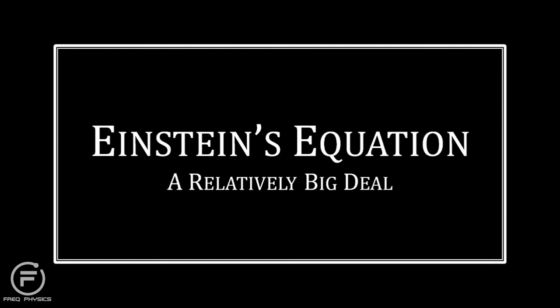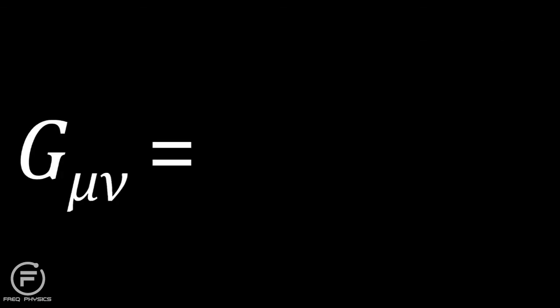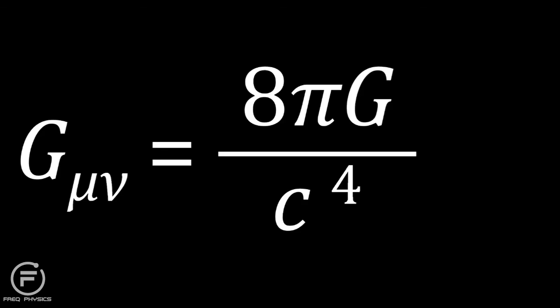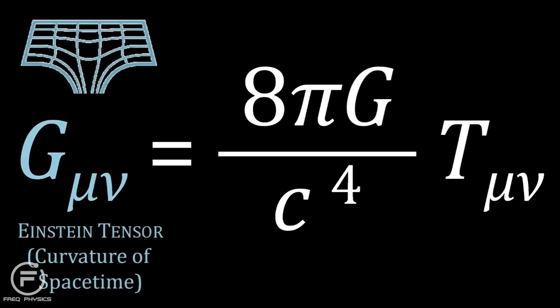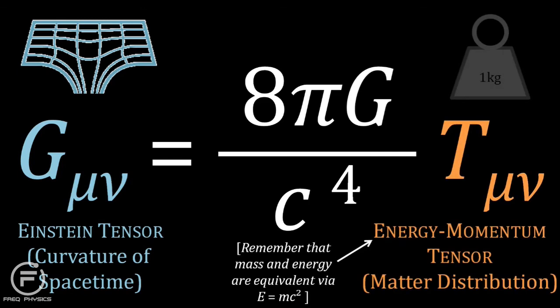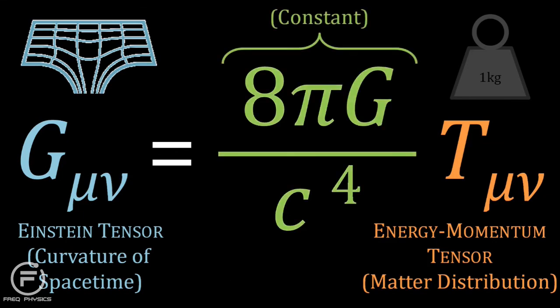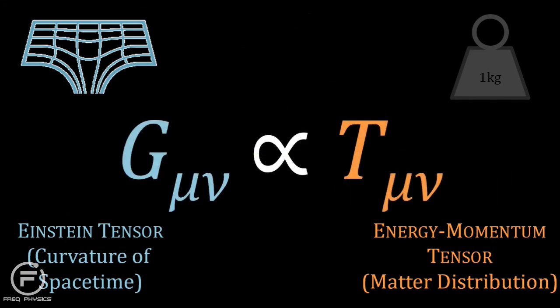Einstein used Riemann's theory to develop an equation to show how gravity formed. Here it is. g mu nu equals 8 pi g over c to the power of 4 times t mu nu. The g mu nu represents the curvature of space-time, and the t mu nu represents the distribution of matter in the universe. The bit in the middle is constant, so we can take it out and we are left with this beautiful relationship: curvature is proportional to matter distribution.